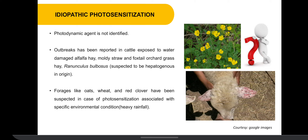The last type of photosensitization is etiopathic. Here, the photodynamic agent is not identified. Forages like oats, weeds and red clover have been suspected in cases of photosensitization associated with specific environmental conditions, that is during heavy rainfall. Also, outbreaks have been reported in cattle exposed to water-damaged alfalfa hay, moldy straw and foxtail orchid grass.